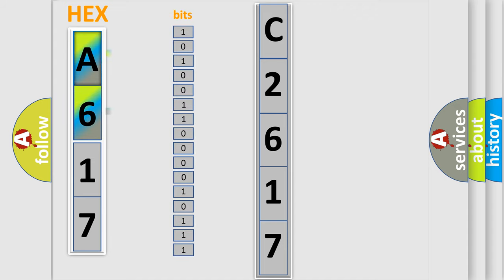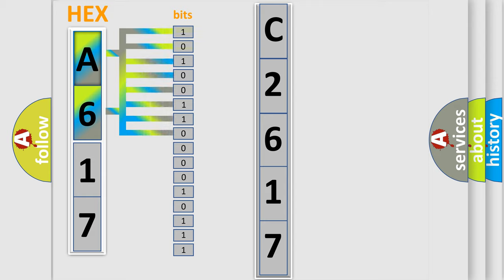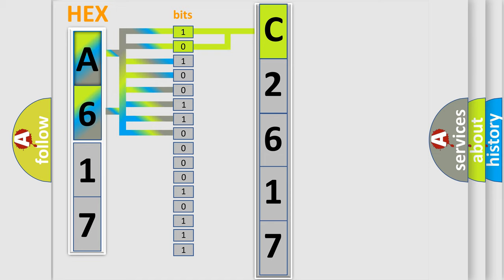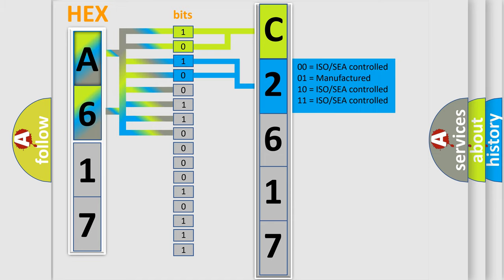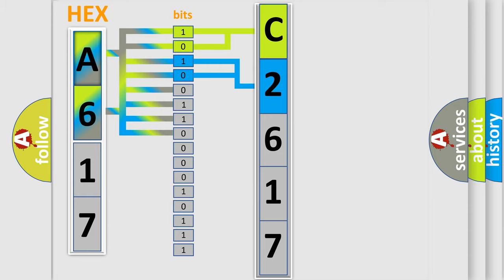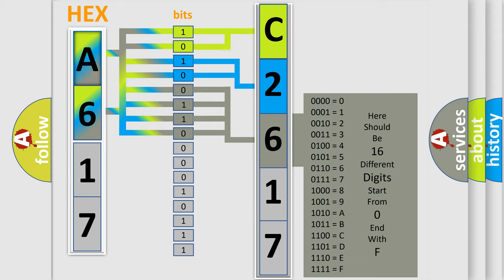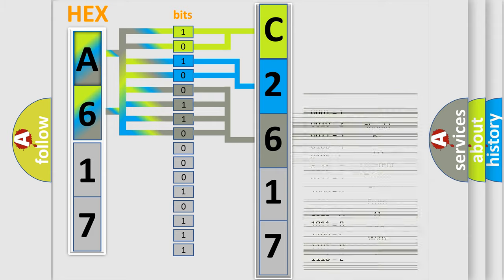The error code is split into two bytes consisting of 16 bits. One bit is the basic unit that each computer works with. The bit has two logical states: zero, low level, and one, high level. By combining the first two bits, the basic character of the error code is expressed. The next two bits determine the second character.